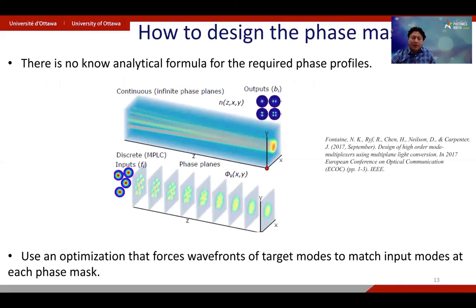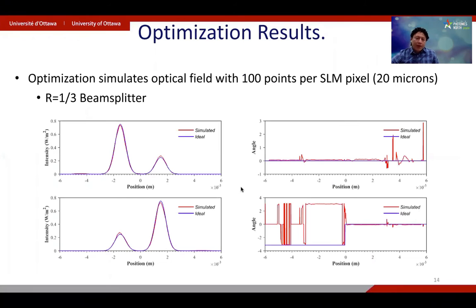How to design the phase masks that we require in the multi-plane light system? There is no analytical formula to obtain them. What we use and what people have used is a wavefront matching algorithm that forces the input modes to match the output modes at each phase plane. We have developed Python code to perform such optimization. So in this simulation, an optical field is simulated using 100 points per SLM pixel. And these are the results for a beam splitter with reflectivity one third. So this is the intensity, the output intensity, and this is the output phase.